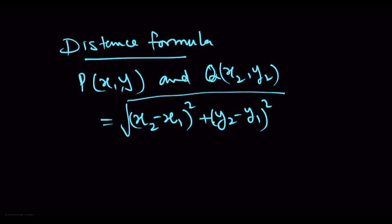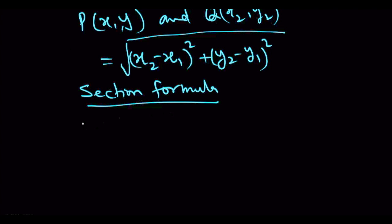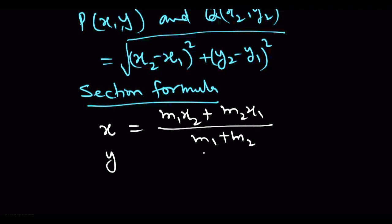Next is section formula. Section formula we studied in junior classes. X ki value is m1x2 plus m2x1 upon m1 plus m2, where m1 and m2 is the ratio in which a point divides a line. Y ki value will be m1y2 plus m2y1 upon m1 plus m2.